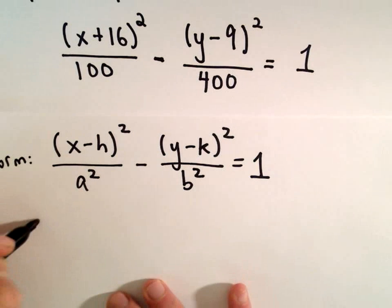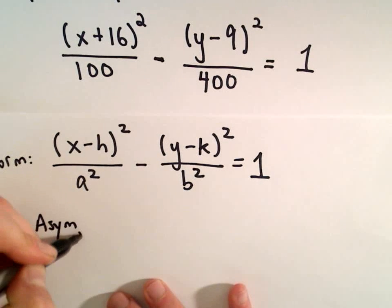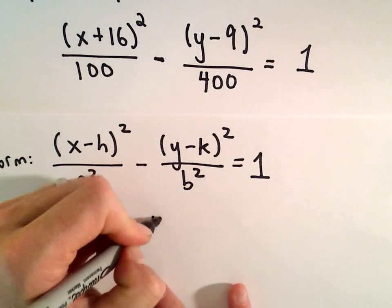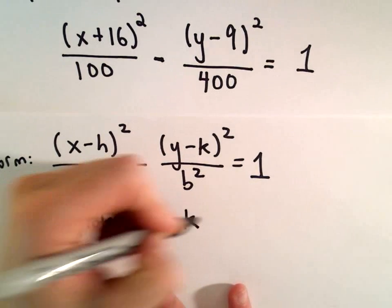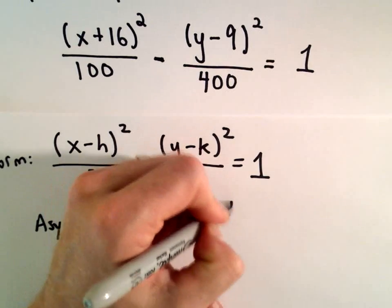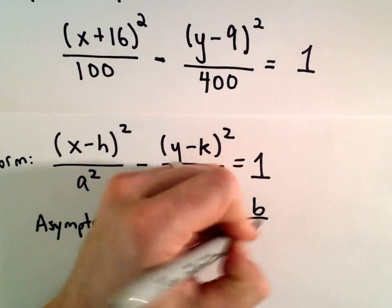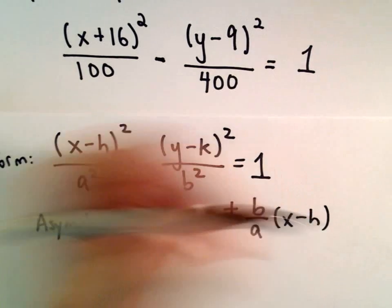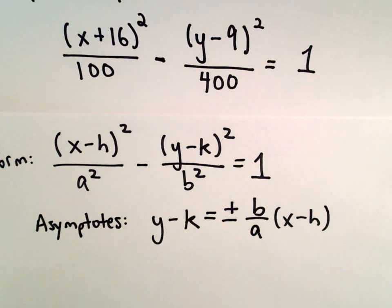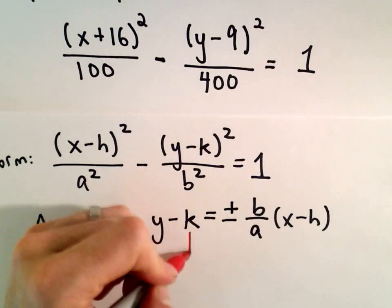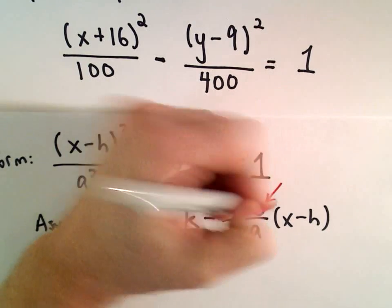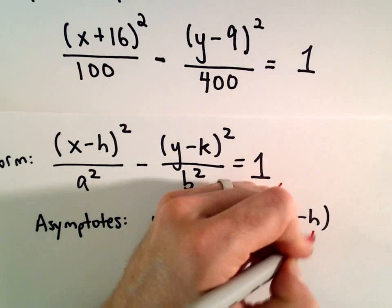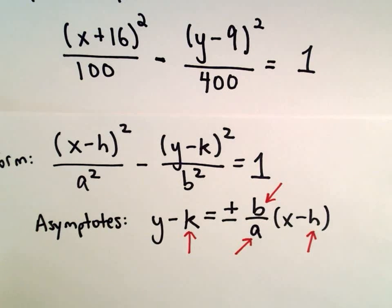The asymptotes are going to be of the form y minus k equals positive and negative b over a times x minus h. So I need to figure out values for k, b, a, and h.